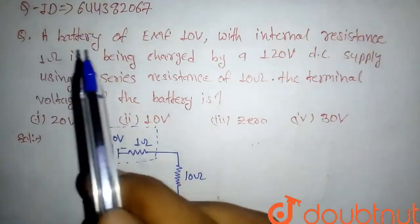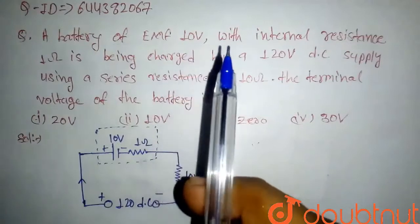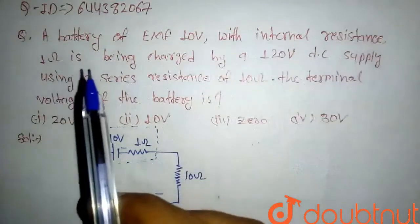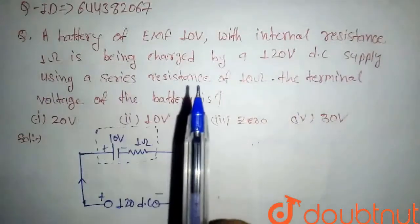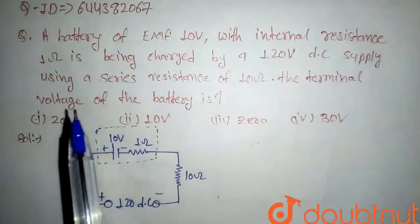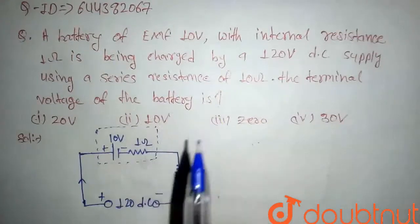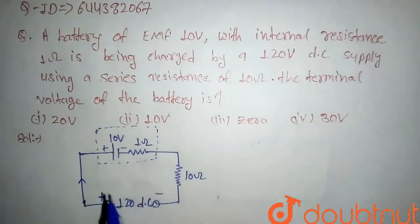Hello everyone, today we have a question: A battery of EMF 10 volt with internal resistance 1 ohm is being charged by a 120V DC supply using a series resistance of 10 ohm. The terminal voltage of the battery is? So this is the circuit diagram.